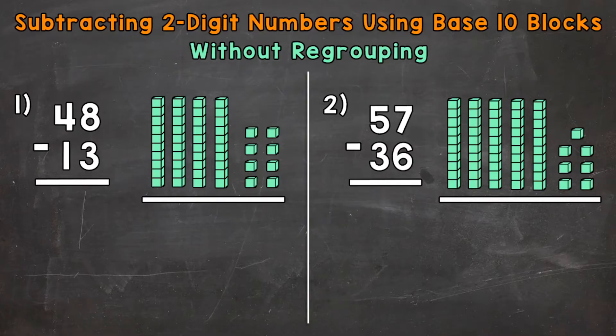The number 48 has a 4 in the tens place. This 4 right here represents 4 tens and has a value of 40. So here are our 4 tens. Now in the ones place we have an 8. That 8 represents 8 ones and has a value of 8. So here are our 8 ones.